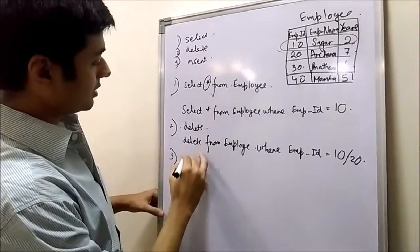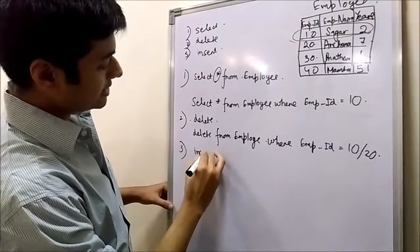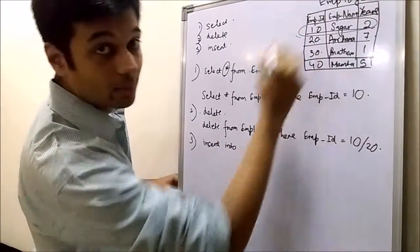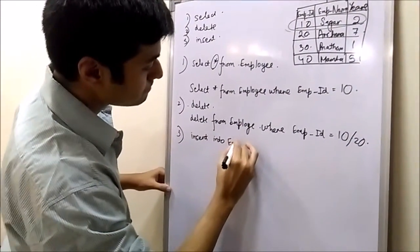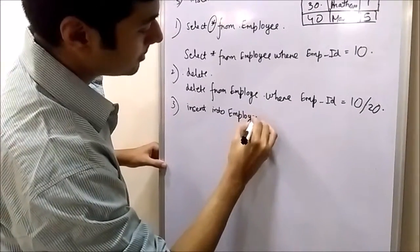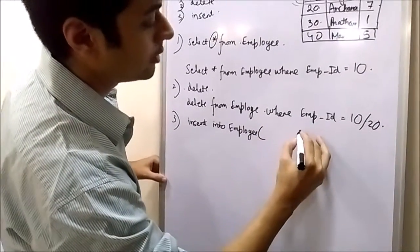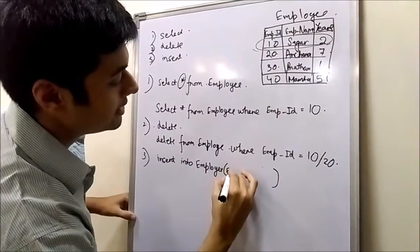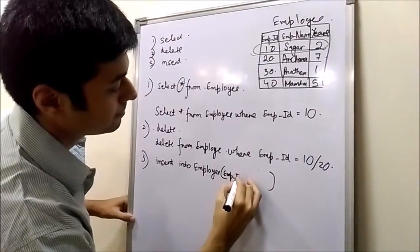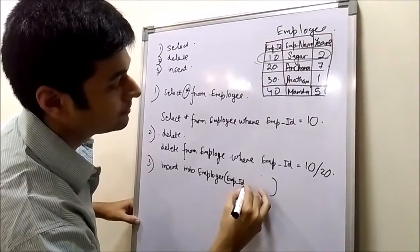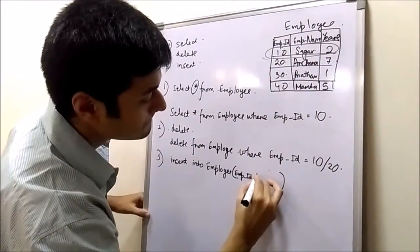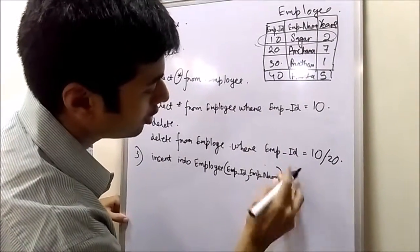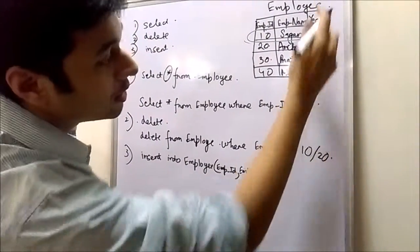So we will write here, insert statement as insert into table name. In the bracket, we will write the column names, all the column names, like empid, comma, emp name, comma, years.